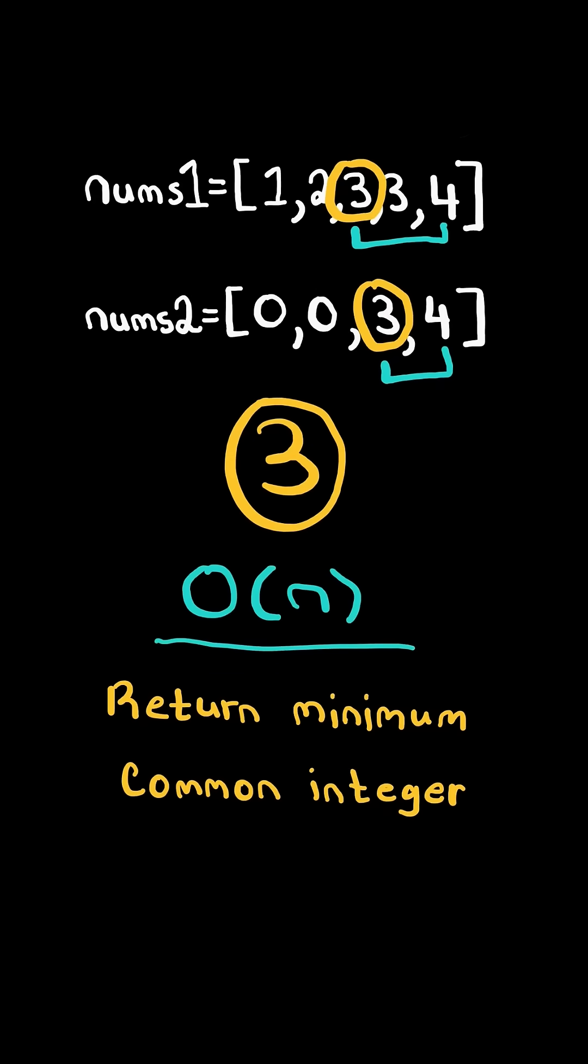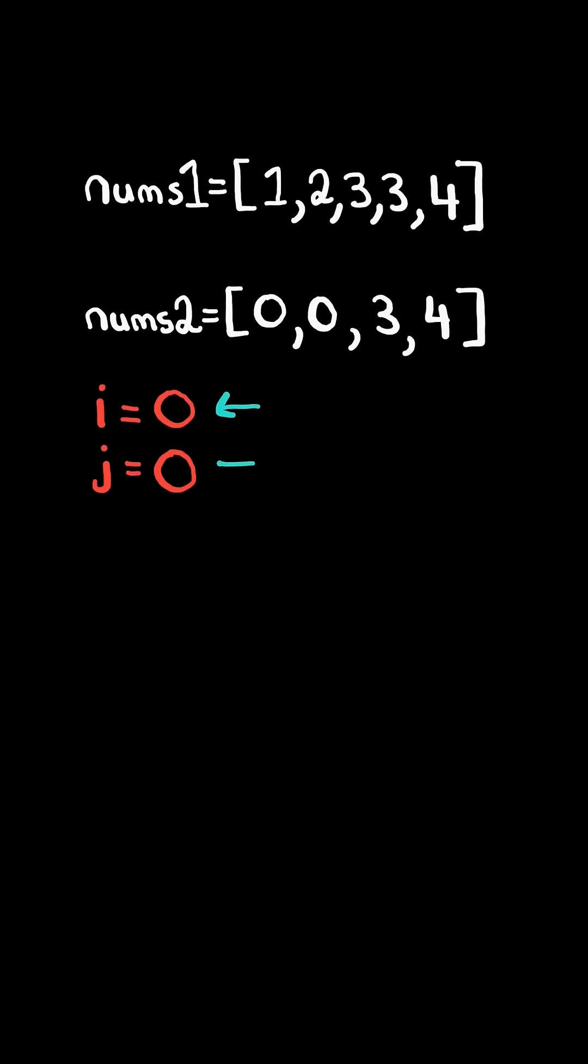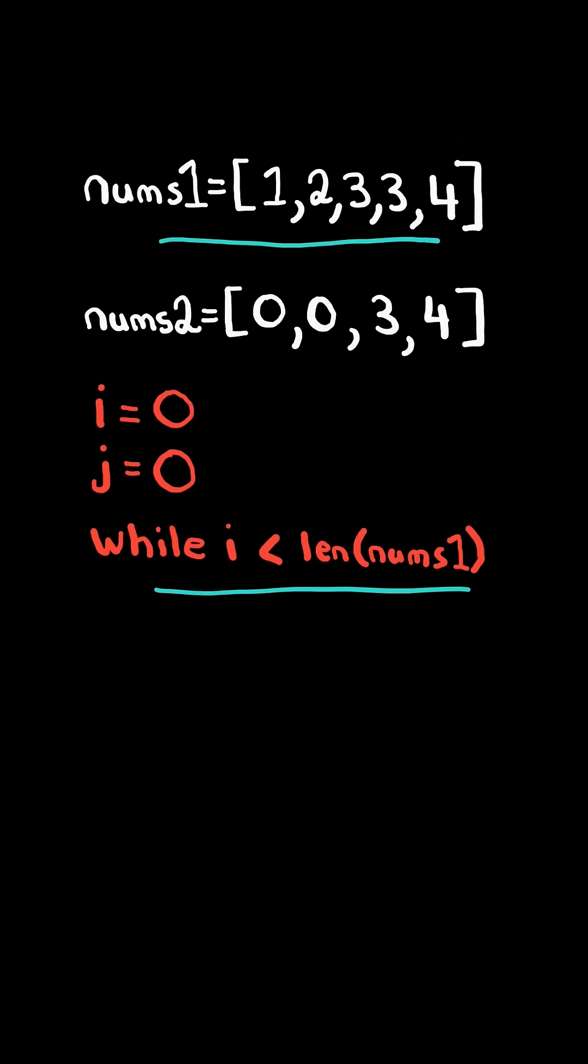We will solve this in O(n) time. First, we will have two pointers, i and j, and we will iterate through nums1 and nums2.